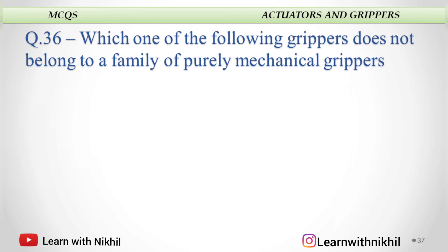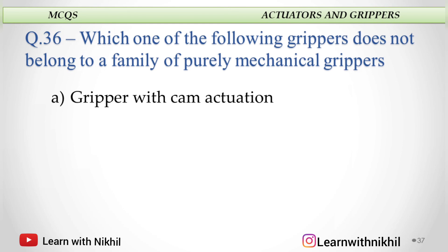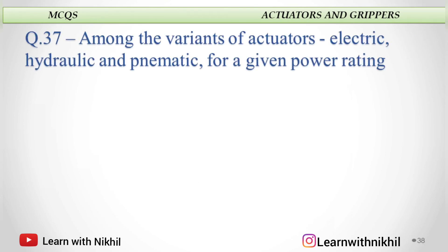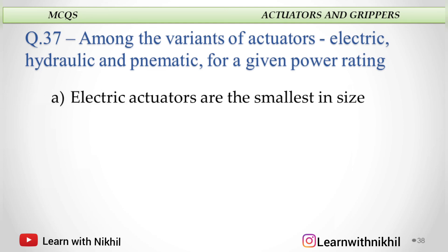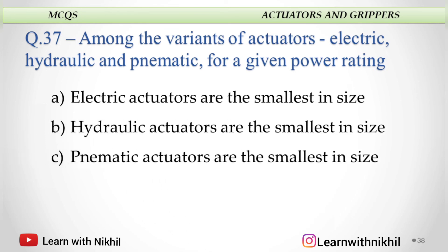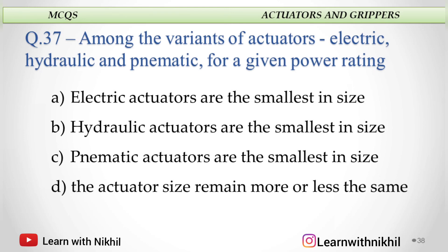Which one of the following grippers does not belong to the family of purely mechanical grippers? A. Gripper with cam actuation, B. Gripper with linkage actuation, C. Gripper with swing block mechanism, or D. Magnetic gripper? And the answer is magnetic gripper. Among the variants of actuators — electric, hydraulic, and pneumatic — for a given power rating, which is smallest in size? A. Electric, B. Hydraulic, C. Pneumatic, or D. Size remains the same? And the answer is hydraulic actuators are smallest in size.